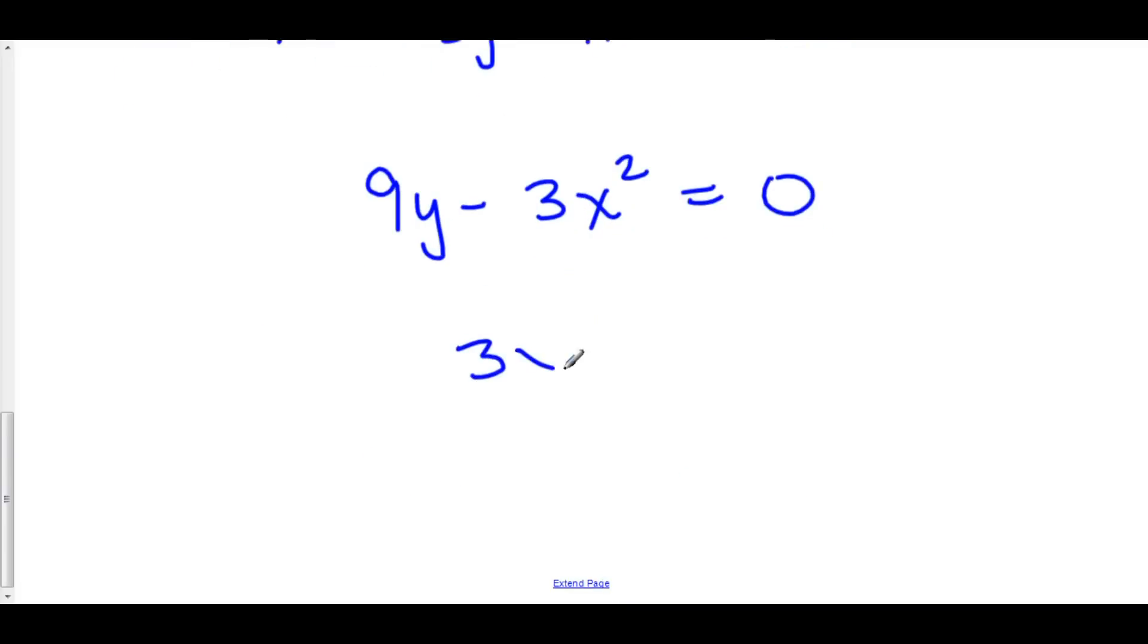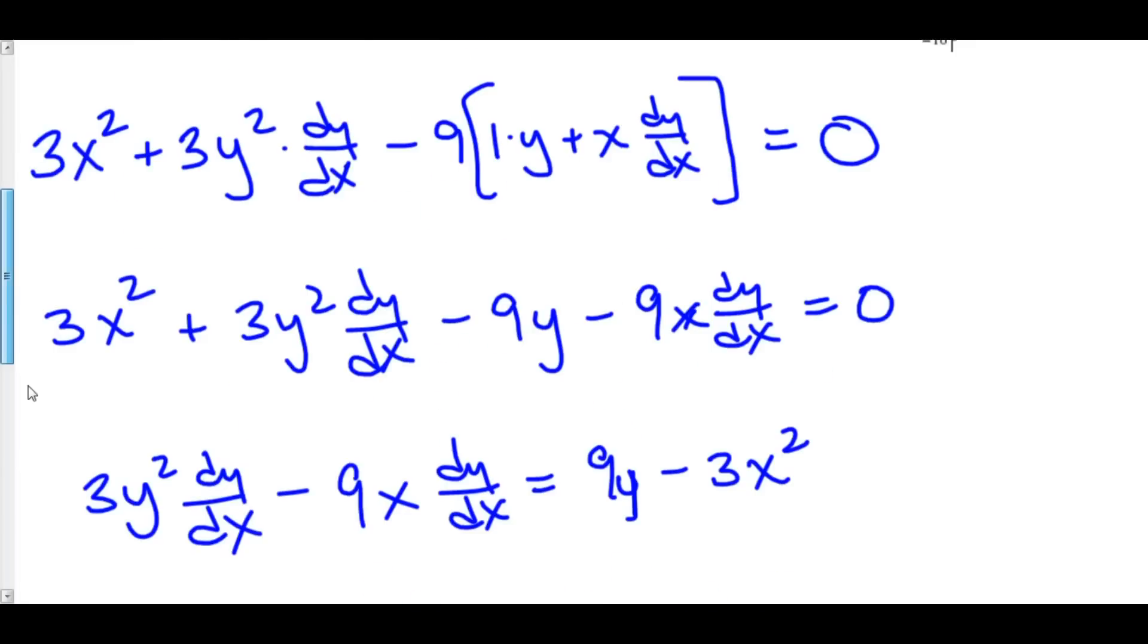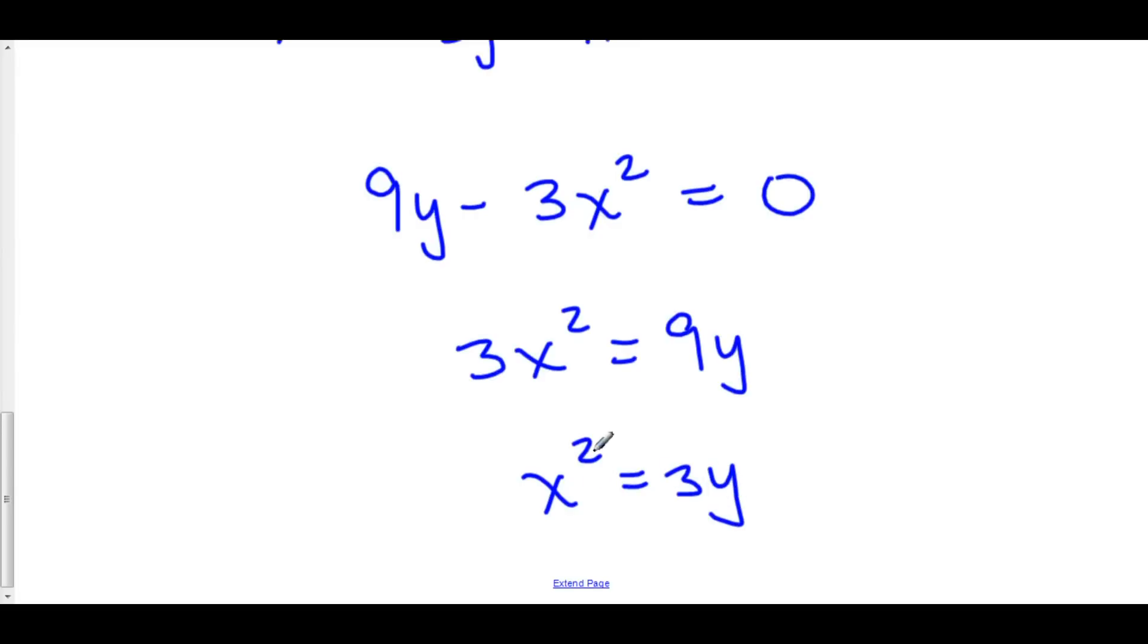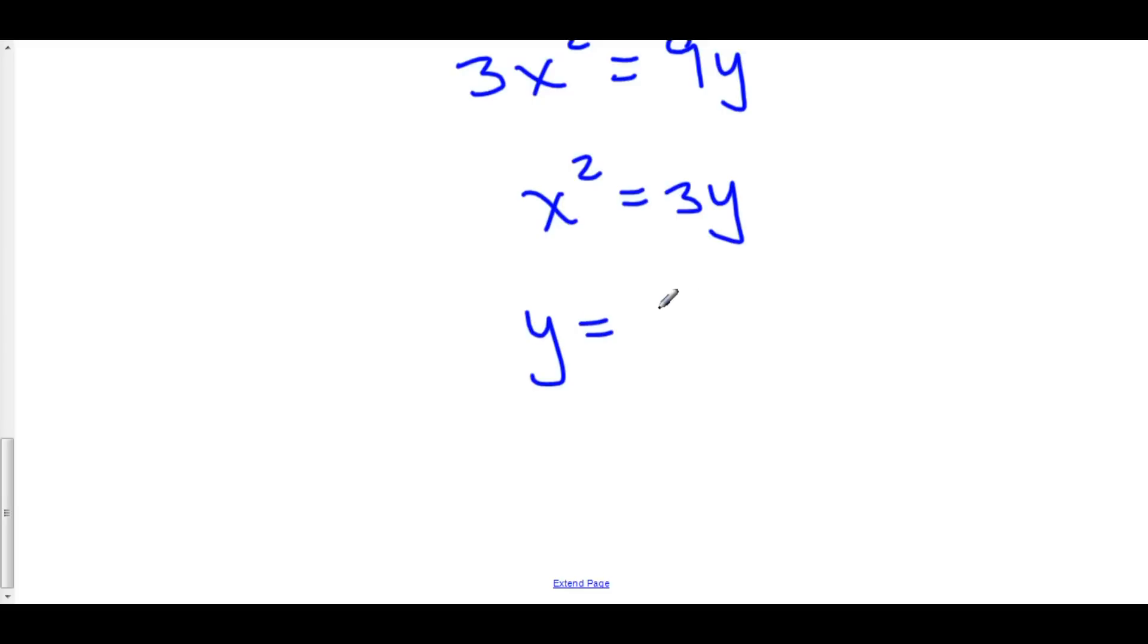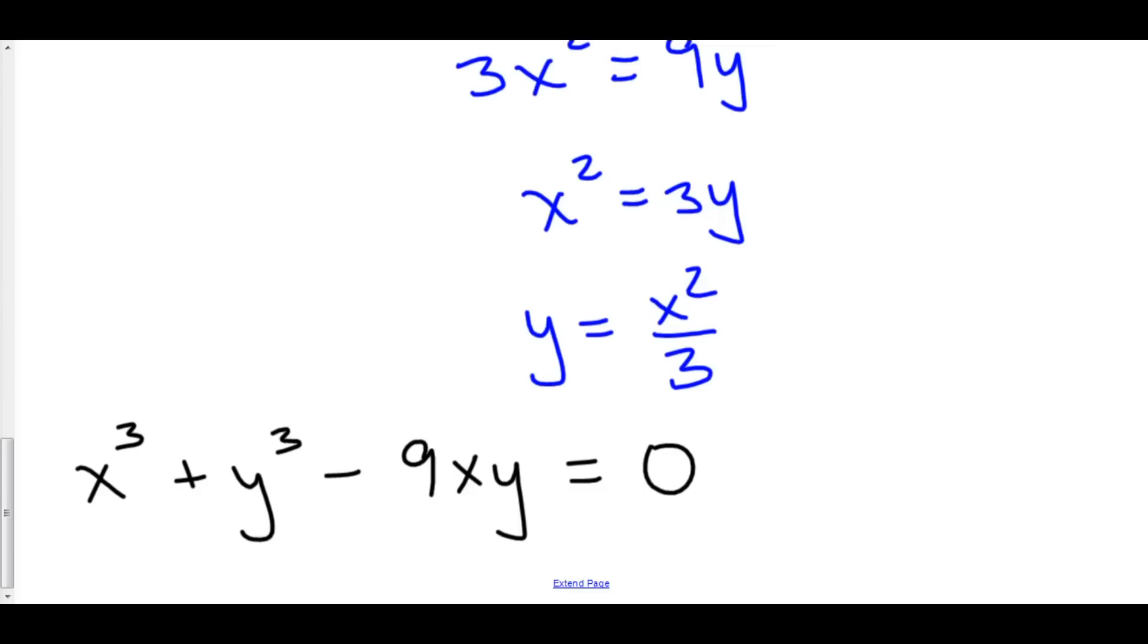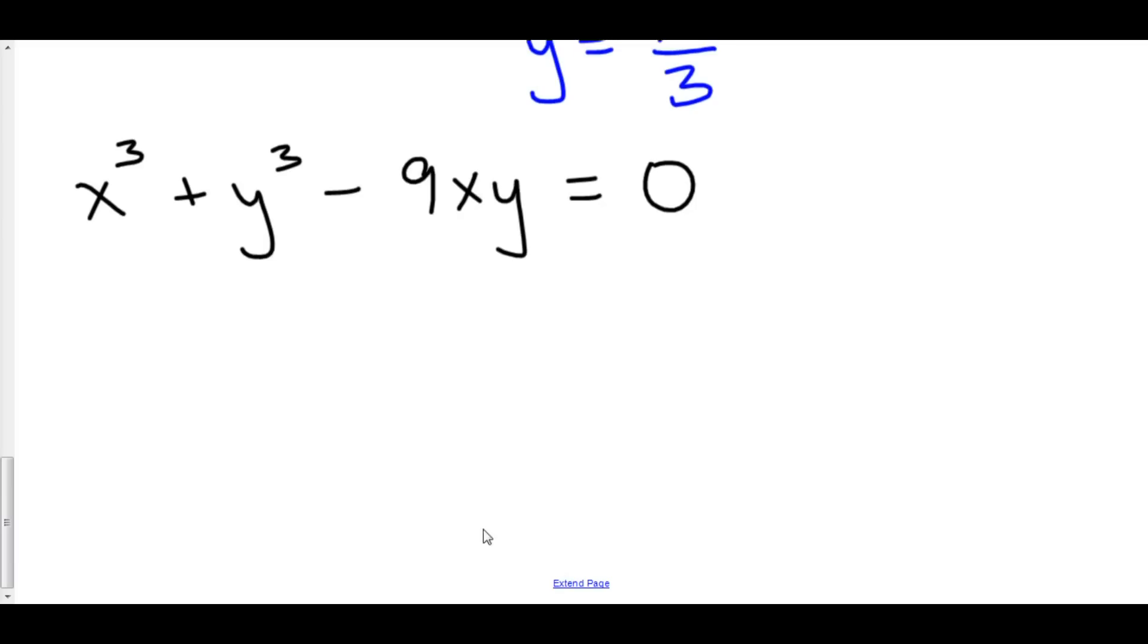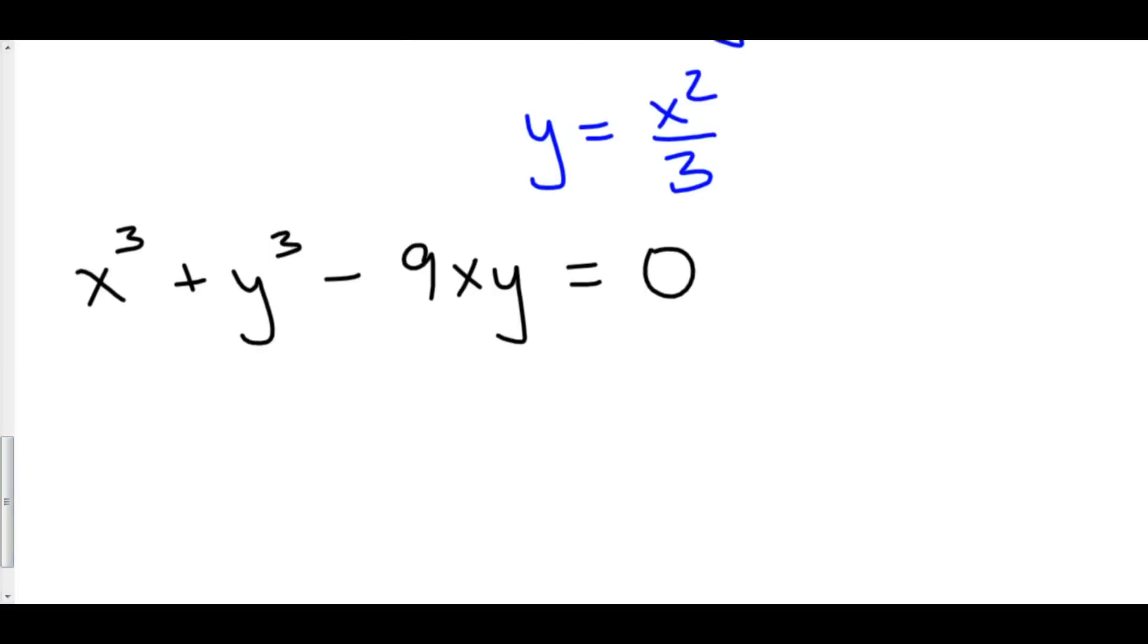This means that 3x squared is equal to 9y. And furthermore, that x squared is equal to 3y. We now have some relation x to y. And we have some function with x's and y's in it. And so, instead of having an x squared equals 3y, we could rewrite y equals x squared over 3. And we can replace x squared over 3 with all of the y's that we have up here. So we know that we have horizontal tangent lines when dy/dx is equal to 0. And dy/dx is equal to 0 when y is equal to x squared over 3.